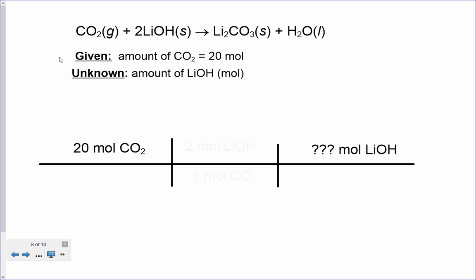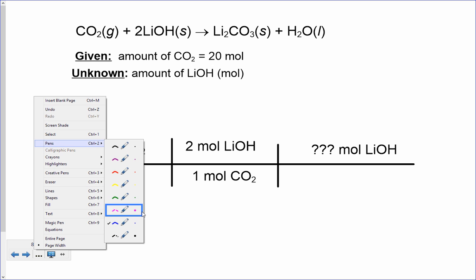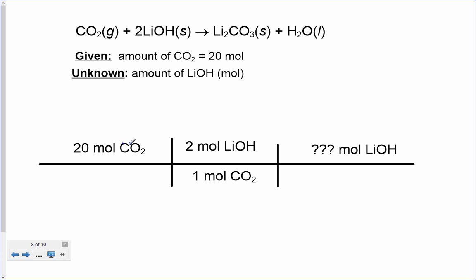The molar ratio comes from our balanced chemical reaction. CO₂ goes on the bottom — there's no number in front of it, so we have one mole of CO₂. Lithium hydroxide has a two in front of it, so we put two on top. CO₂ cancels out, and 20 times 2 gives us 40 moles of lithium hydroxide needed to react with the 20 moles of carbon dioxide.